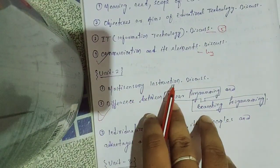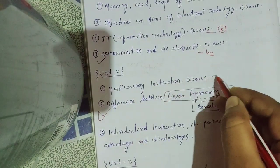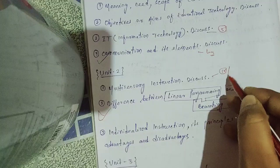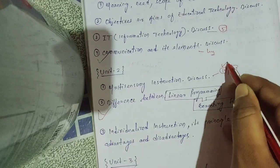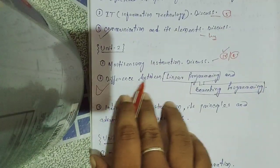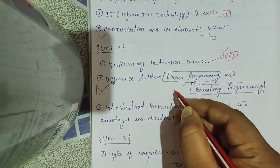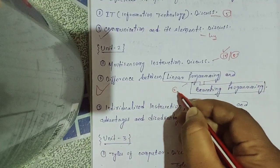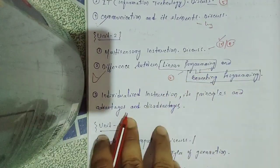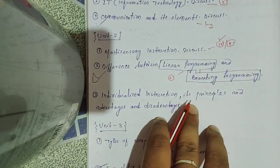Multi-sensory instruction is the most important question. The most important long question with good chances. Difference between linear programming and branching programming is a five-mark question. Individualized instruction and its principles and advantages and disadvantages is another long question.